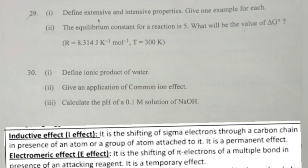Electromeric effect (E effect): It is the shifting of pi electrons of a multiple bond in the presence of an attacking reagent. It is a temporary effect.